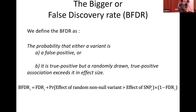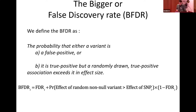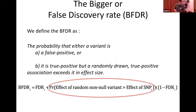You can write this probability informally as the FDR plus an additional term: the probability that the effect of a random non-null variant is bigger than the effect of your SNP, times one minus the FDR. There are well-established ways of estimating the FDR; the key challenge is estimating this additional probability term.